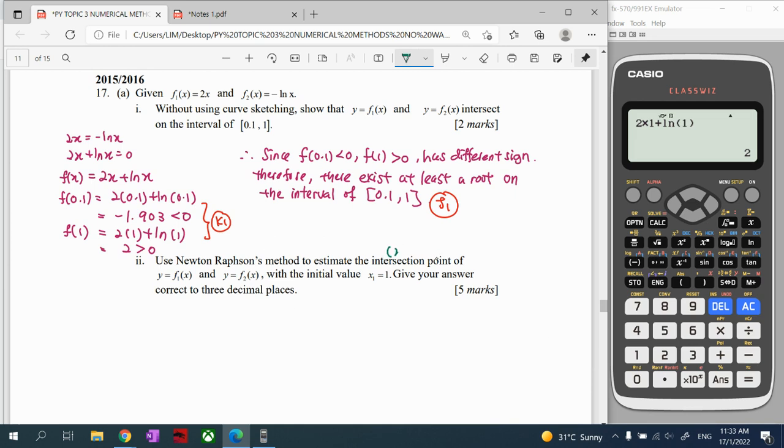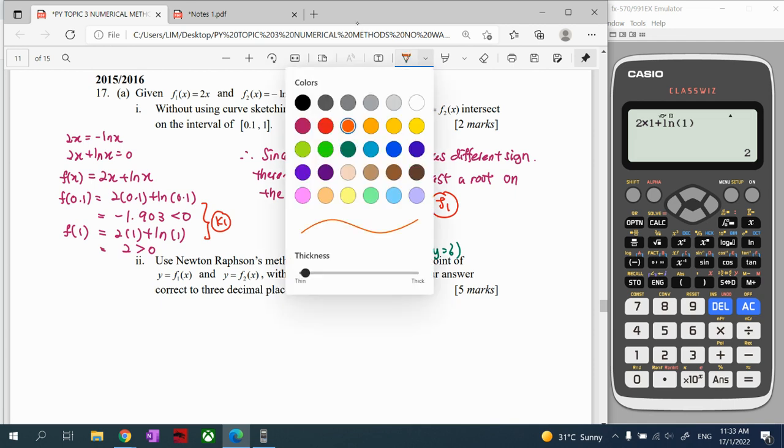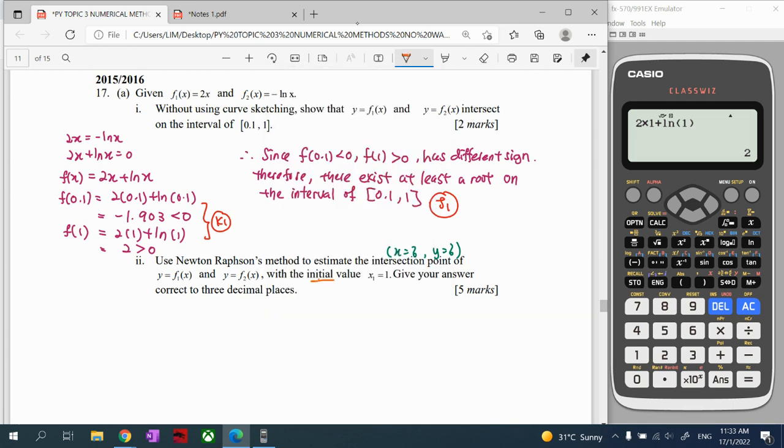Then we proceed to our next part. So our next part we're going to use Newton-Raphson method to estimate the intersection point. Besides the x value, we also want the y value, we want the point. If the initial value, so these questions they are given us initial value, correct your answer to three decimal places. So bear in my calculation, extra one or two decimal is the maximum, you cannot extra three. The rules is like that.